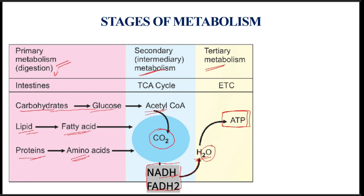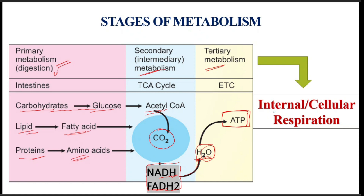Because oxygen acts as the ultimate acceptor of the electrons or the hydrogens, this process is called internal or cellular respiration. This is the way how the food we eat — which contains the major macromolecules like carbohydrates, lipids, and proteins — is ultimately converted to energy through different stages of metabolism.